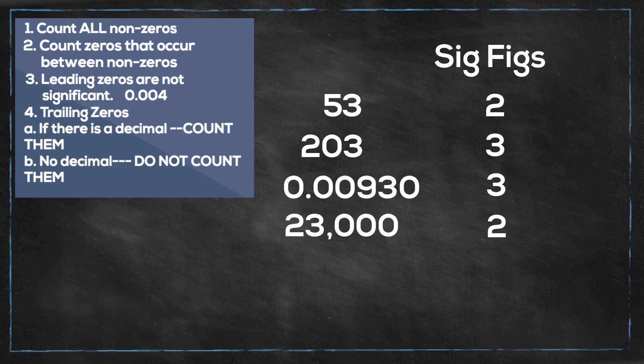Next we have this number, 1.0040. Well, you have two non-zeros, so you know you will count these. Then you have two zeros between non-zeros, so we will count these. And then we have a trailing zero. But remember the rule for trailing zero. A trailing zero must have a decimal, and you do. So you will count all of them. So it will be five significant figures.